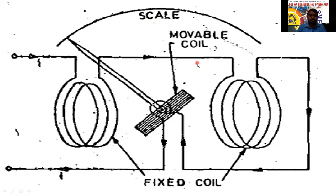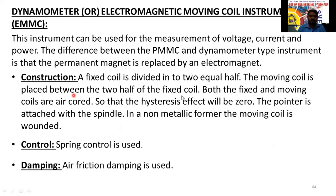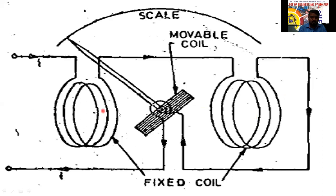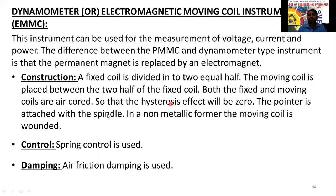From the notes: a fixed coil is divided into two equal halves. The moving coil is placed between those two halves. Both fixed and moving coils are air-cored — in the diagram there is no core material at all; air acts as the core, which is why it is called air-cored.